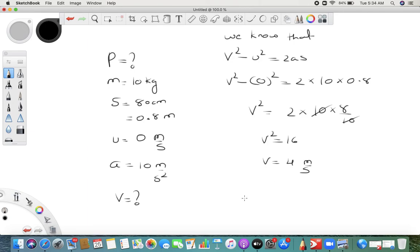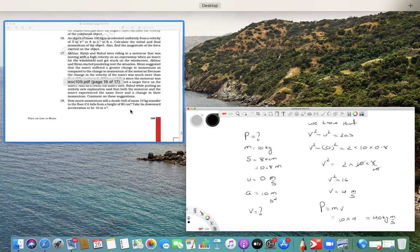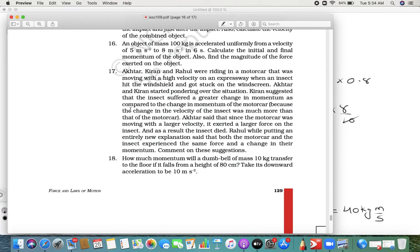Now momentum p is equal to mv, so mass is 10 and v is 4, so it is 40 kg meter per second. With this we have completed our chapter. I hope you understand what I am trying to say. If you have any queries, you can feel free to reach out to me. Thank you, have a good day.